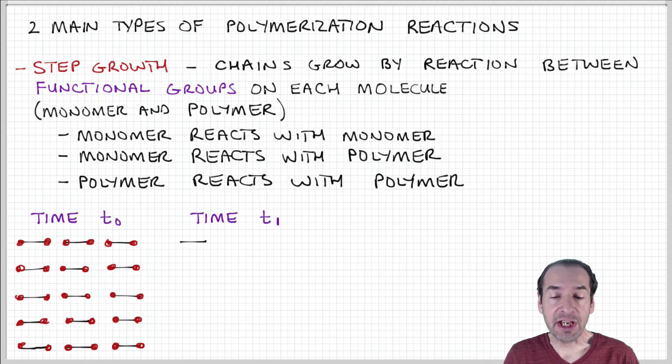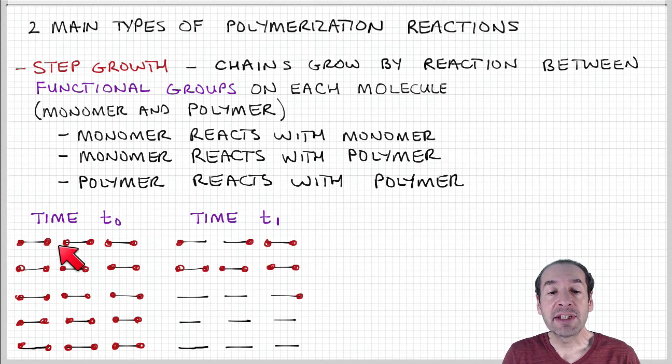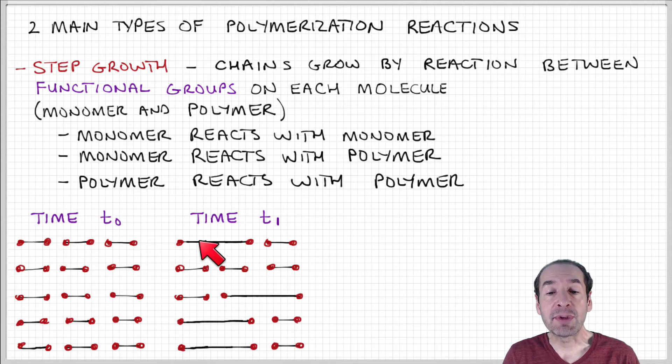Then, at some later time, these functional groups have an opportunity to react and combine some of these monomers to form chains. For example, these two functional groups react to form a segment here. These two functional groups react and so forth.